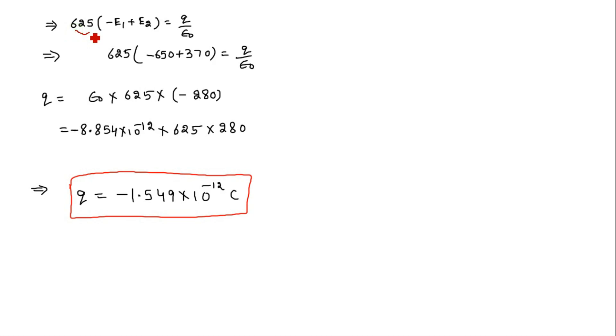When we solve this further we get 625 as common. So it will be minus E1 plus E2 equals Q by epsilon naught. But the value of E1 is given to be 650 Newton per coulomb and the value of E2 is given to be 370 Newton per coulomb.